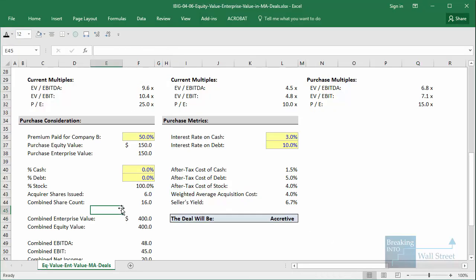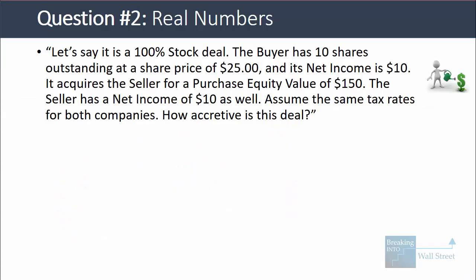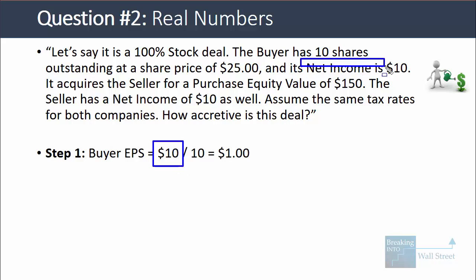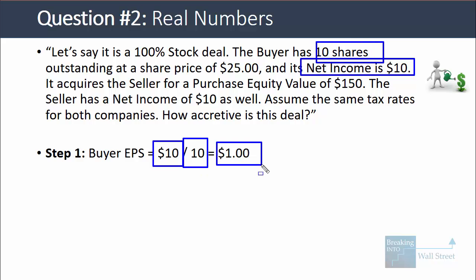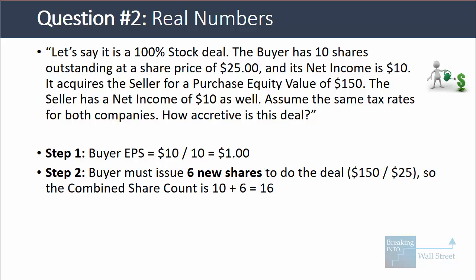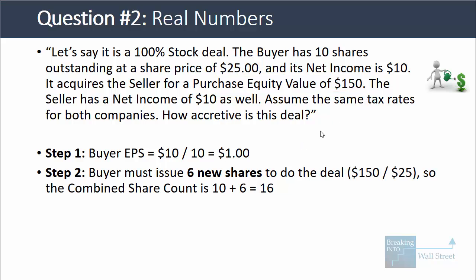We have this scenario laid out in Excel, but let's look at the basic idea first. The buyer's standalone EPS is net income of 10 divided by 10 shares outstanding, which is $1 per share. To do this 100% stock deal, the buyer will have to issue 6 new shares, because each share is worth $25 and they're paying 150 for the seller: 150 / 25 = 6. The seller's shares go away — the seller's exact share count doesn't matter. The combined share count will be the buyer's old count plus the new shares issued: 10 + 6 = 16.